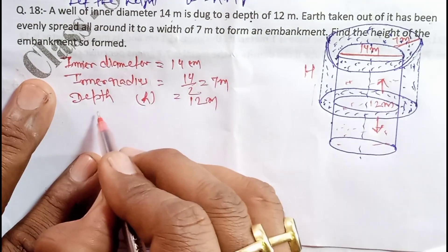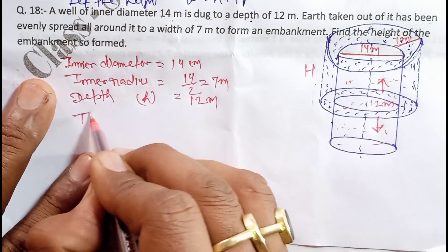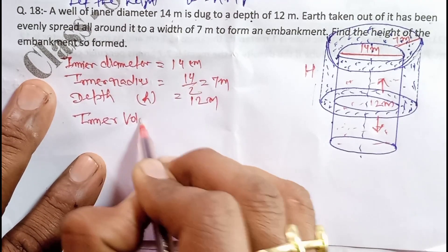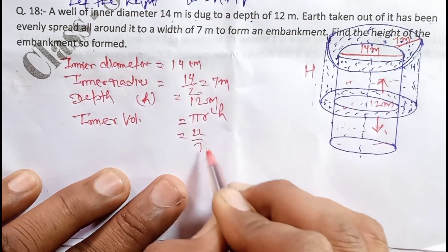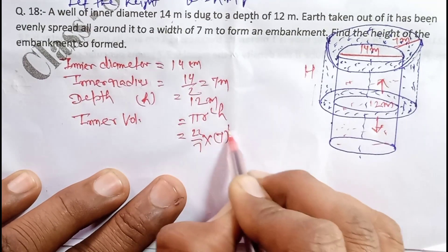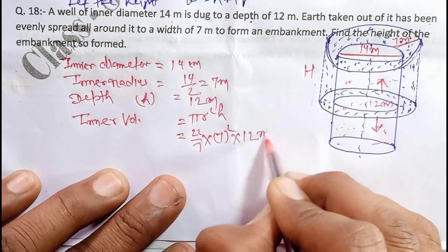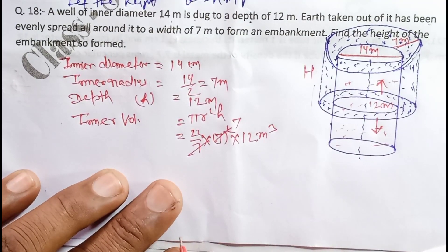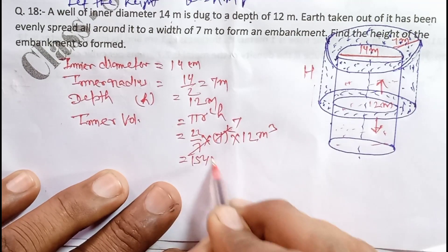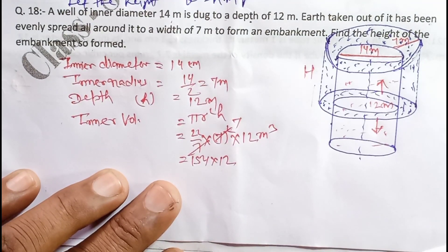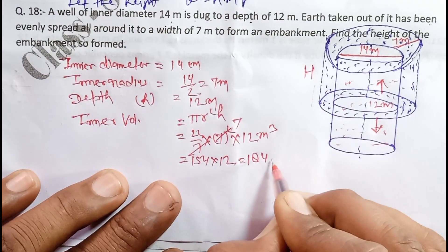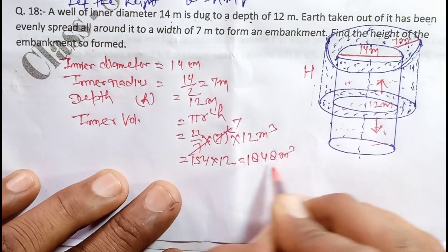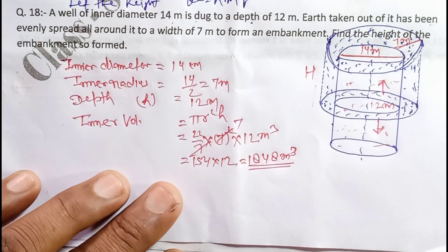First, we find the inner volume. Inner volume = πr²h. The value of π is 22/7, r² = 7², h = 12 meters. The 7 cancels, giving us 154 × 12 = 1848 cubic meters.